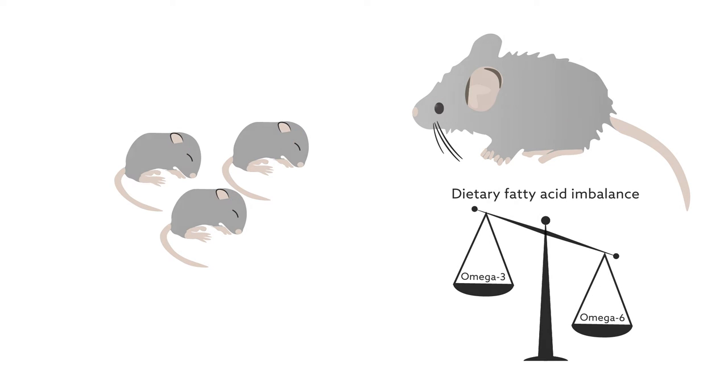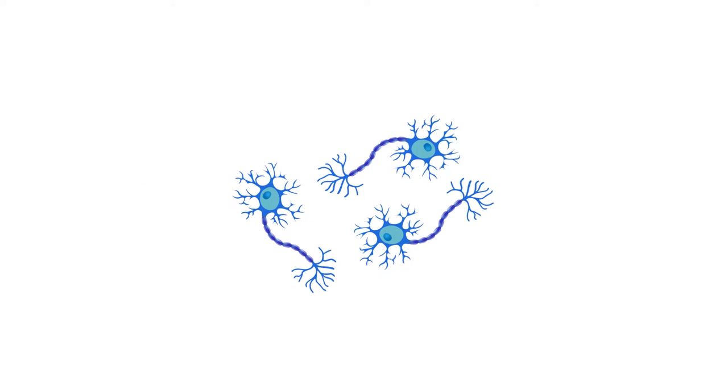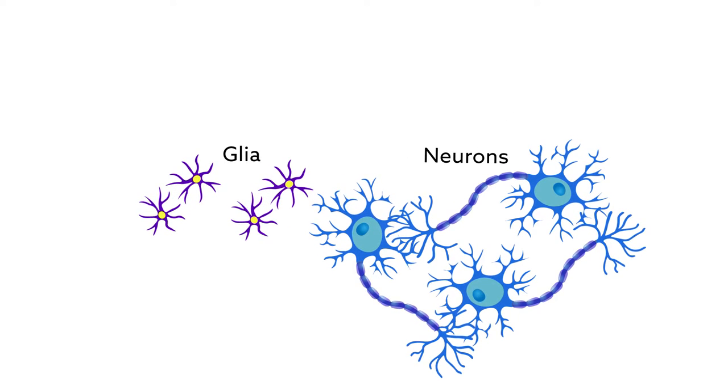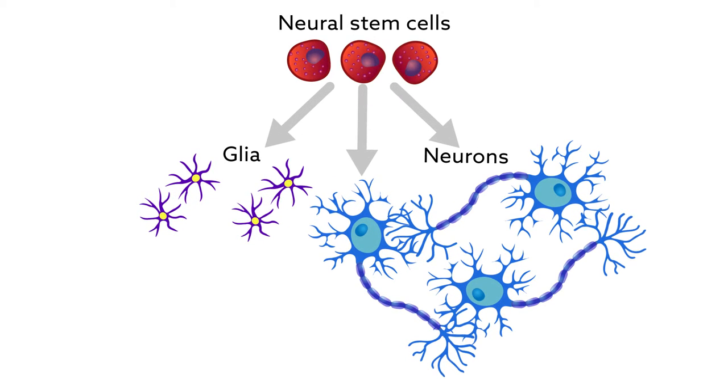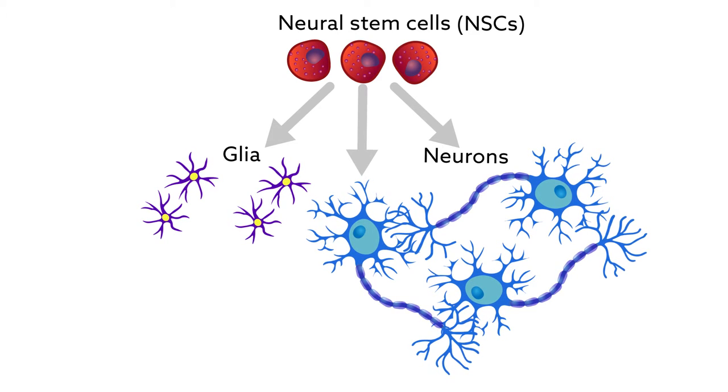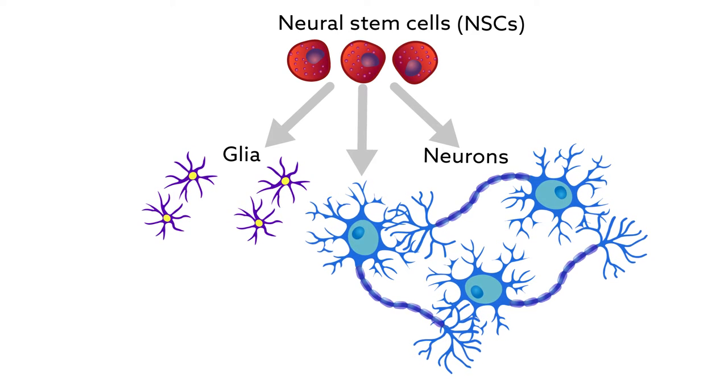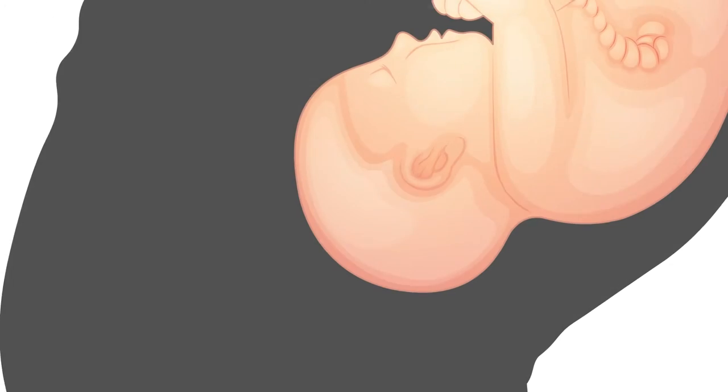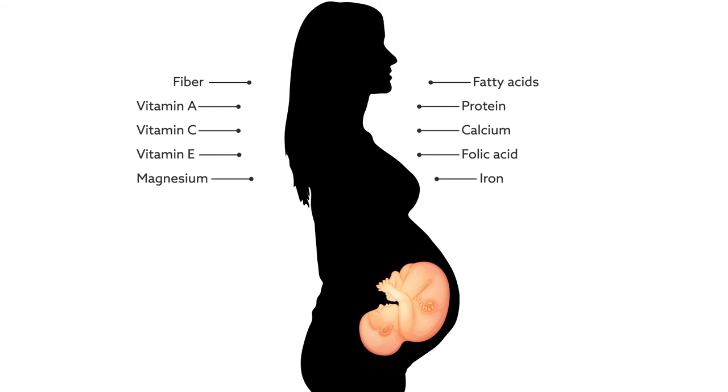The brain is composed of neurons and supporting cells called glia. Both of these cells are produced by neural stem cells, or NSCs. The production of the correct number of neurons and glia by NSCs is critical for brain function, and because this process occurs before birth, it can be influenced by the nutrients and environment provided by the mother.